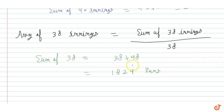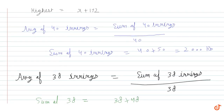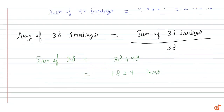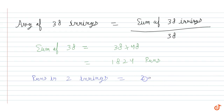Now, if we exclude the lowest and highest score innings, the runs scored in those two innings will be the difference between the total 40 innings score and the 38 innings score. So runs in two innings is equal to 2000 minus 1824, which is equal to 176 runs. So the sum of the two innings is 176.